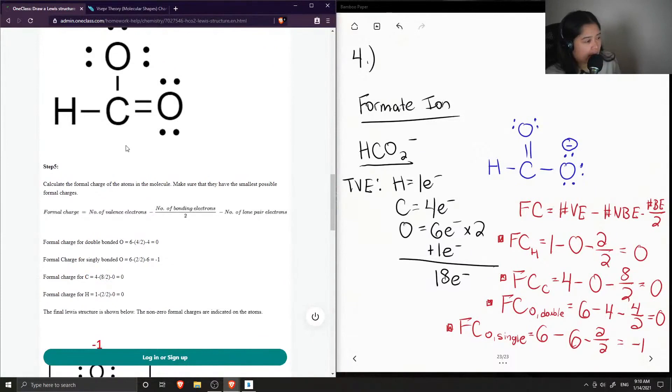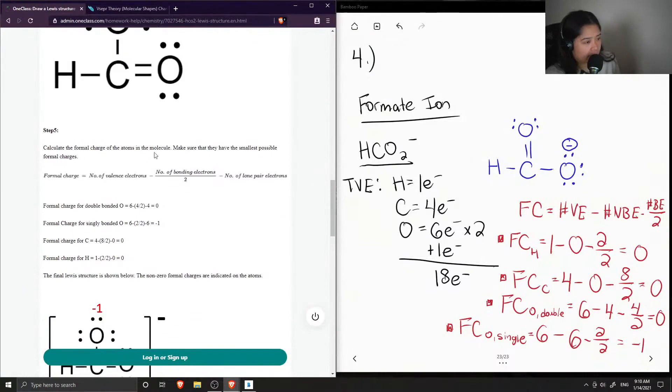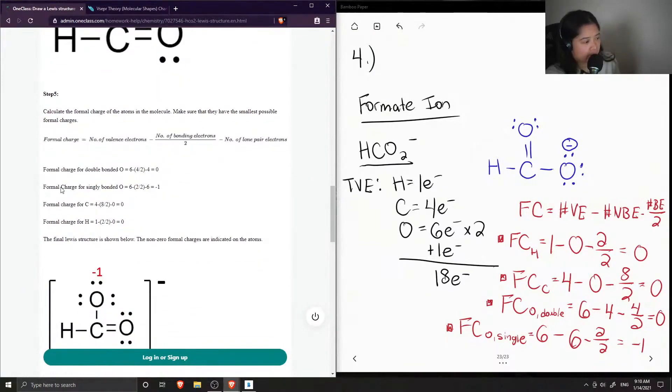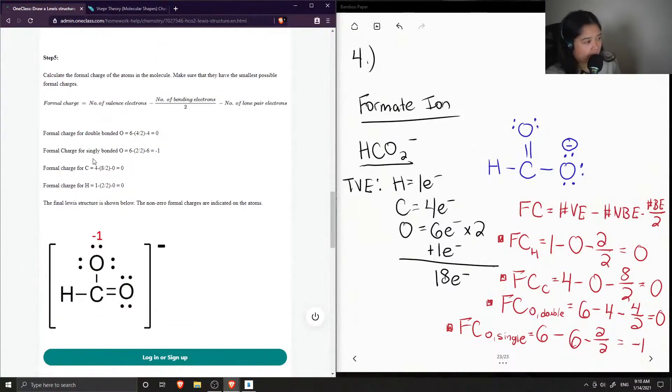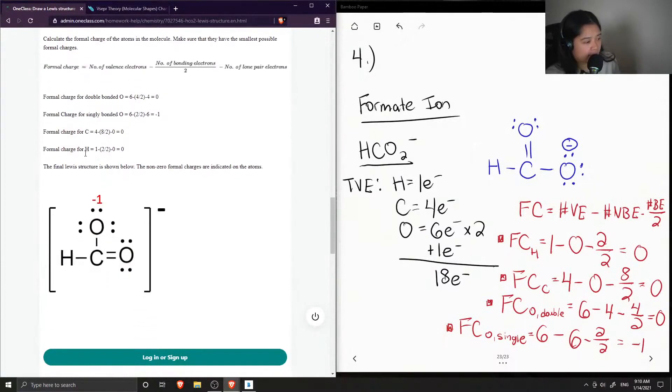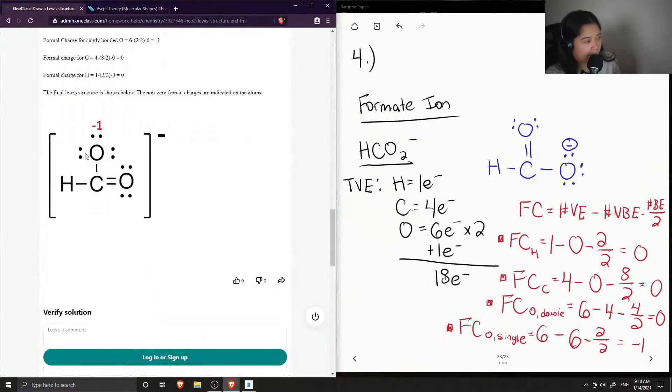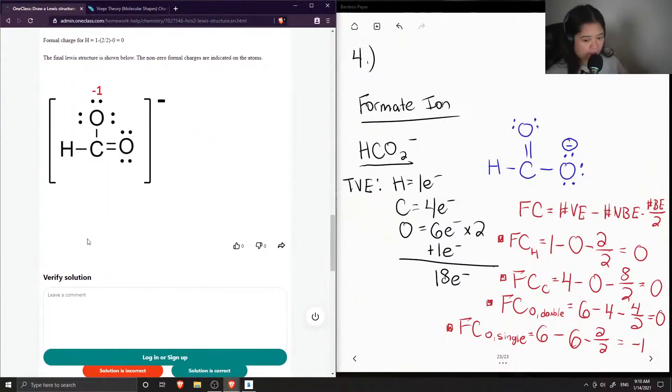And then they calculated the formal charge of all of the atoms in the molecule. Make sure that they have the smallest possible formal charges. Okay, and they got negative one for the singly bonded oxygen. And got the correct Lewis structure. So the solution is correct.